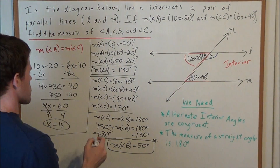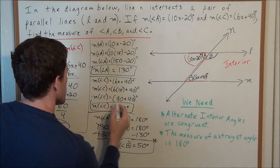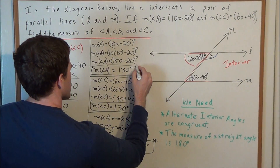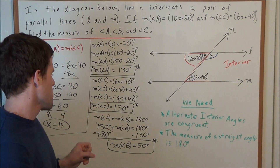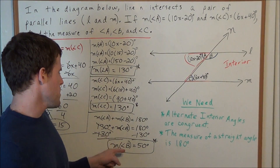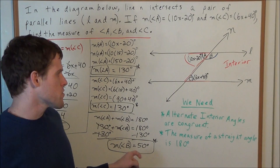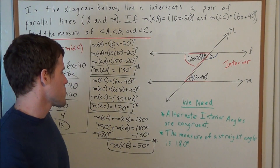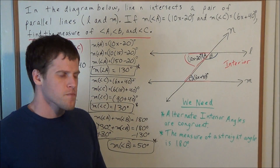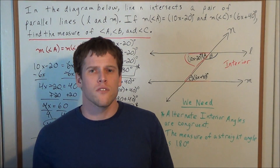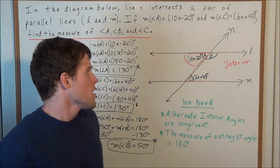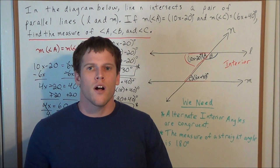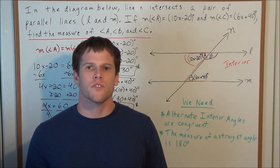So our solutions: the measure of angle A is 130 degrees, the measure of angle B is 50 degrees, and the measure of angle C is 130 degrees. This concludes this parallel lines and transversal problem. Thank you all for watching and I hope that this was helpful.